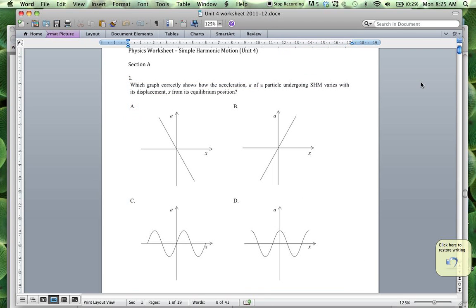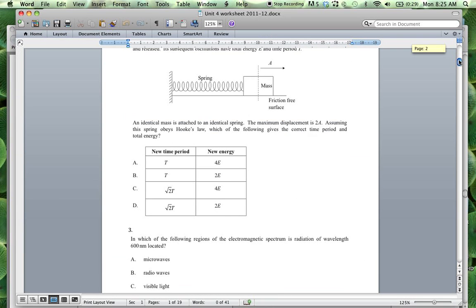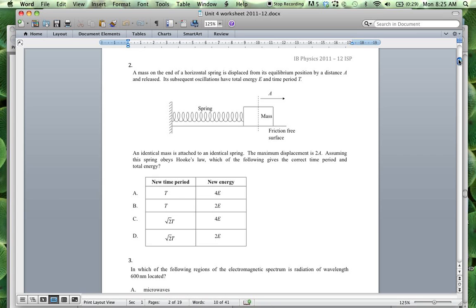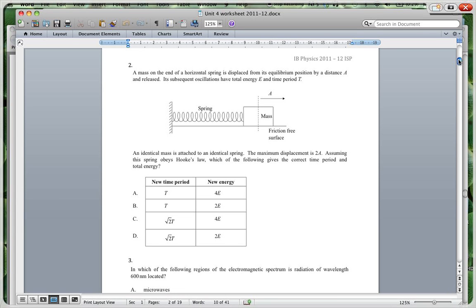Going on to question 2. It says a mass on the end of a horizontal spring is displaced from its equilibrium position by distance A and released. Its subsequent oscillations have a total energy E and a time period T. An identical mass is attached to an identical spring. The displacement is 2A. Assuming this spring obeys Hooke's law, which of the following gives the correct time period and total energy? So we're looking at time period and total energy. Now for simple harmonic motion, I hope that all of you are okay. It's got to be one of these two because the time period is going to remain the same.